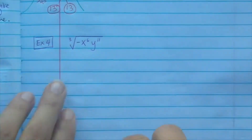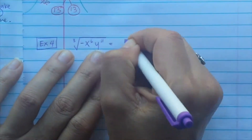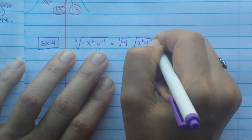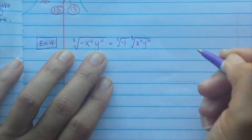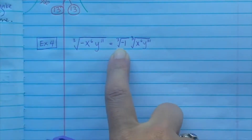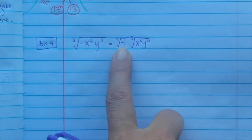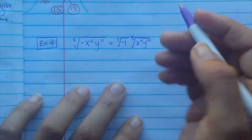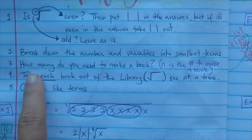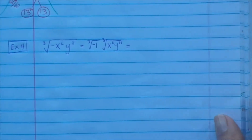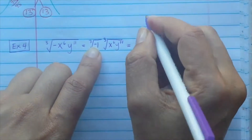Example 4: the cube root of negative x^6y^11. This is a special case — you have to take the negative out first. Separate it as the cube root of negative 1, times x^6, times y^11. Negative 1 times negative 1 times negative 1 equals negative 1, so it stays negative outside. Since n is odd (3), we don't have to worry about absolute value.